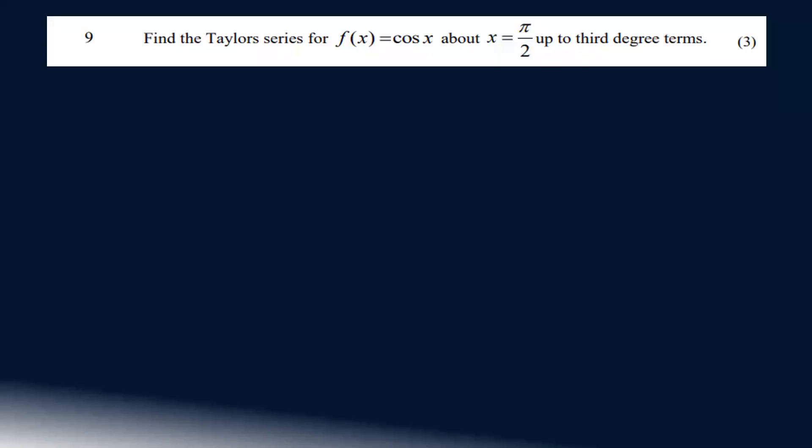Find the Taylor series for f(x) = cos(x) about x = π/2, up to third degree terms.